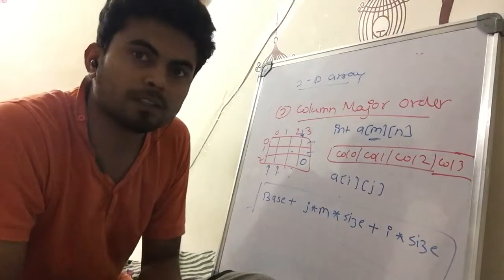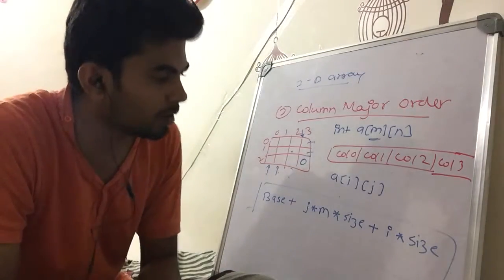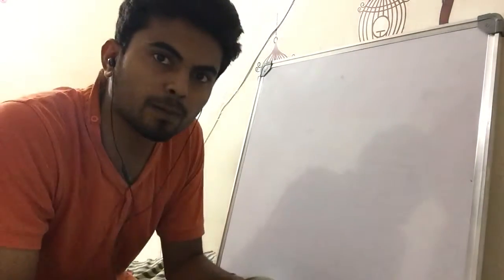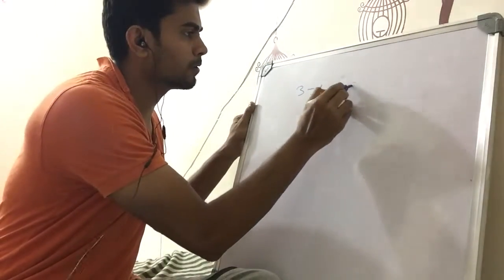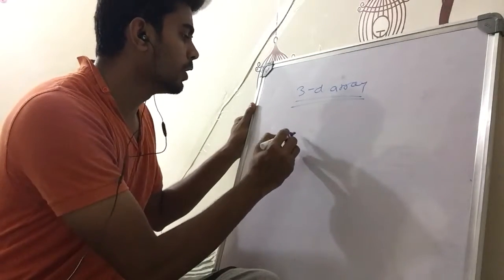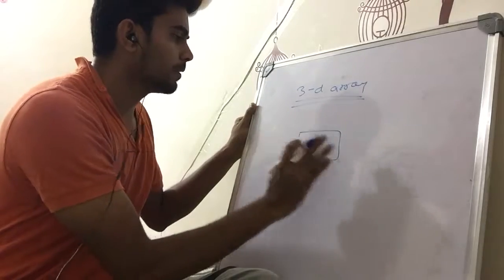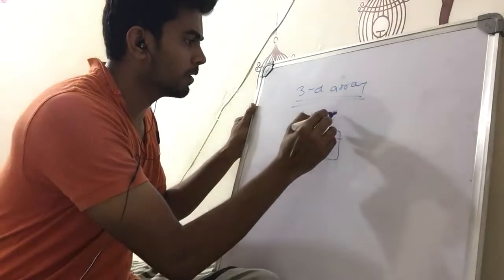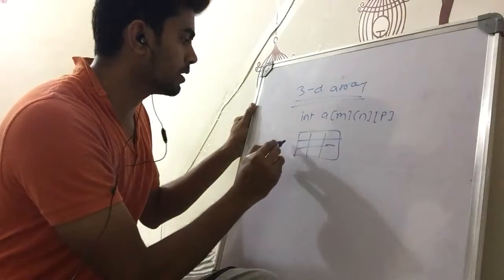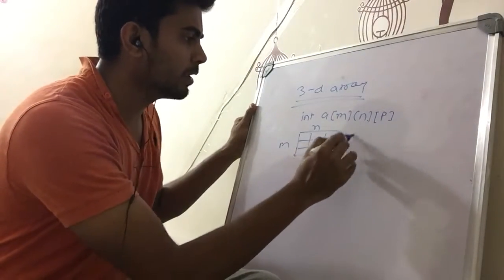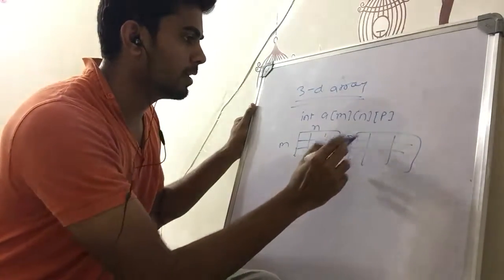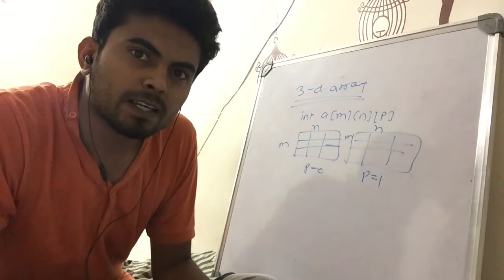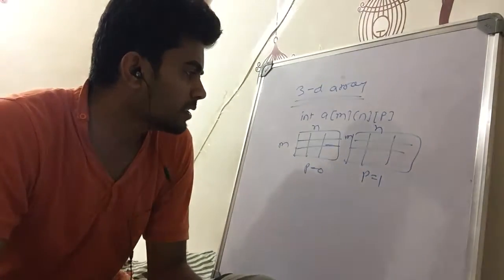I guess that's quite clear. The same concepts applied to 2D arrays can be extended to 3D arrays and further to 4D or N-dimensional arrays. A 3D array is declared as int a[m][n][p], where you define the m×n matrix for each value of p. If p equals 2, you have p=0 and p=1 layers. We will discuss this in the next lecture — thanks.